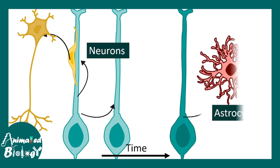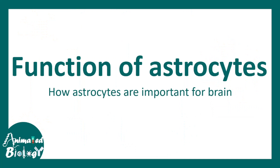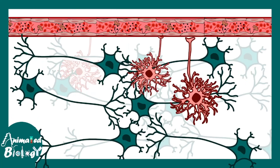These progenitors, instead of giving rise to neurons, would eventually give rise to astrocytes. So that means astrocytes are born from the later-derived radial glia itself. The neurogenesis-to-gliogenesis switch is an active area of research in developmental neuroscience.